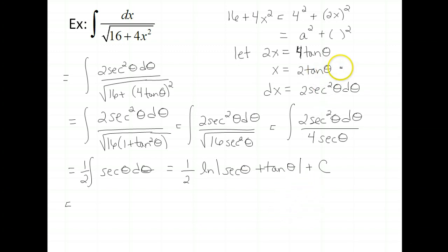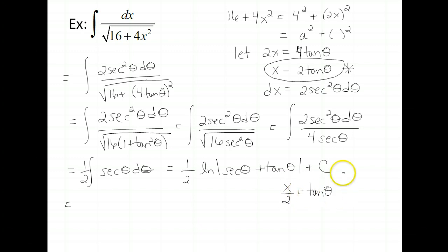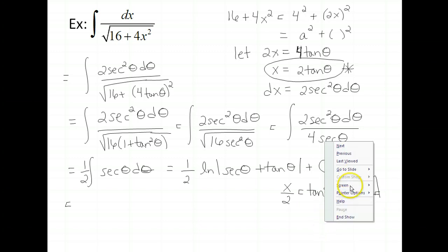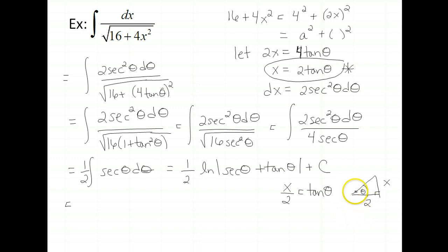Since x equals 2 tan theta, that tells us x/2 equals tangent of theta. Remember, tangent is opposite over adjacent. So if we draw a right triangle with angle theta, the opposite side is x and the adjacent side is 2. We don't know the hypotenuse, but by the Pythagorean theorem it is the square root of 4 plus x squared.